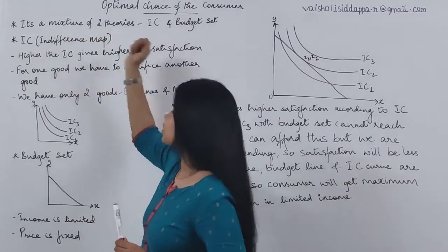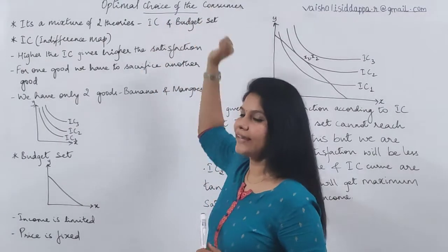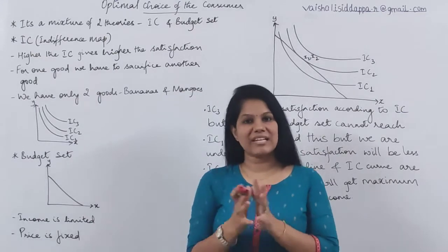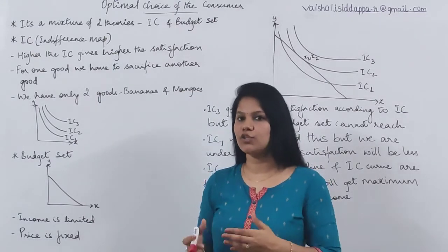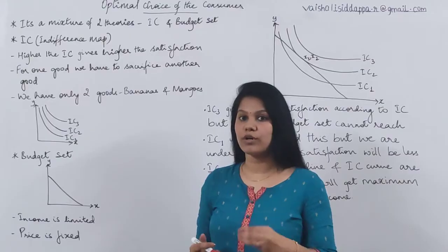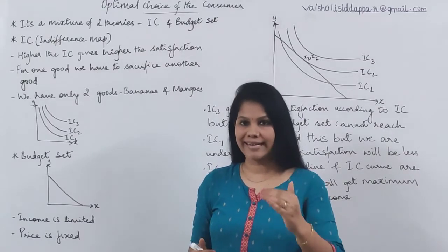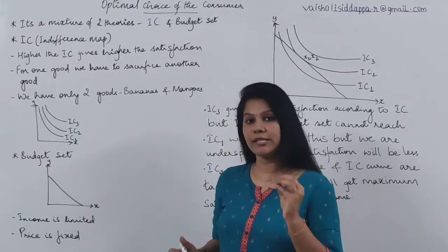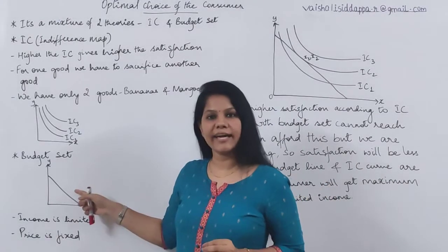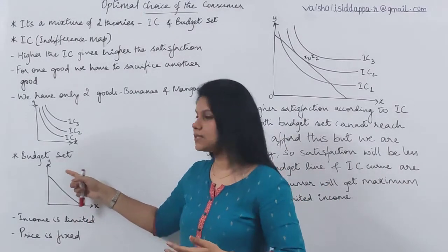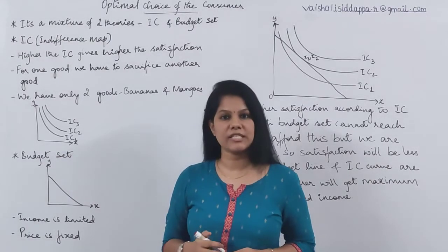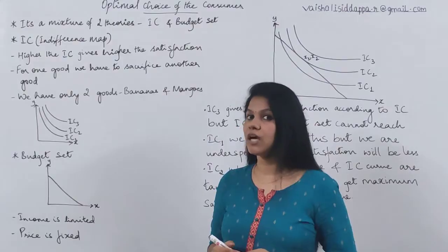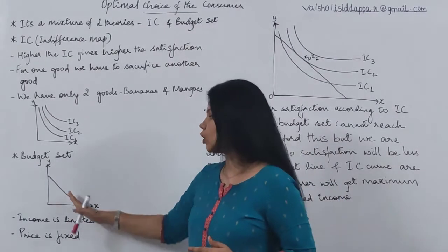The two theories we are going to talk about are indifference curve and budget set. In the previous classes, I have already discussed what is indifference curve, how exactly it appears in the diagram, how we present it, and what it means. In other previous classes, we already discussed what is budget set, how we construct the budget set, what is the importance of it, and why it is downward sloping.